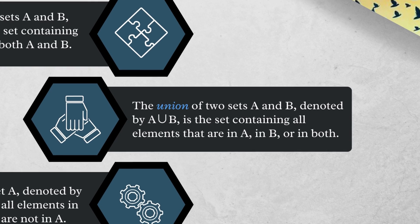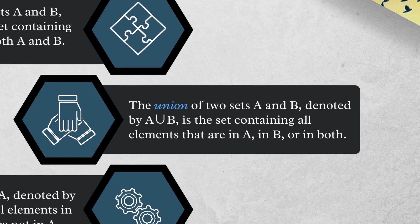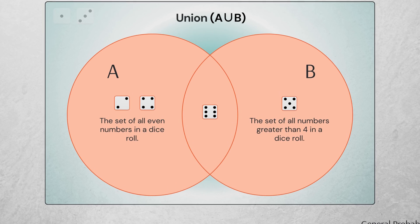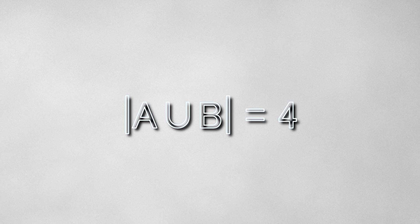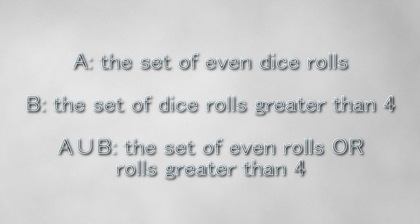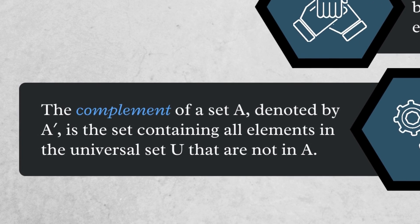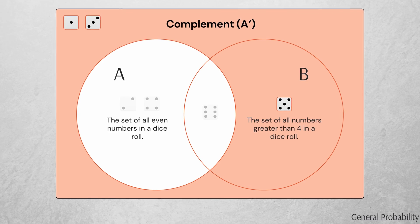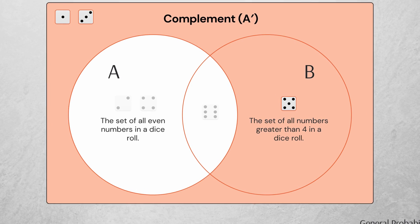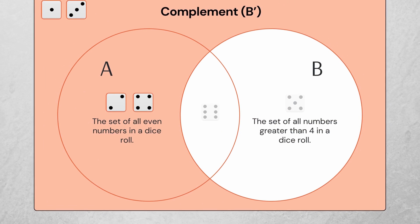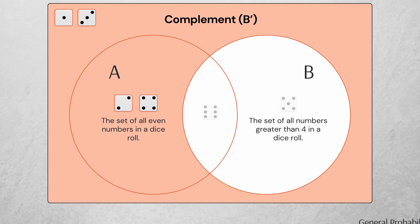A union B is a set containing all elements that are in A, in B, and in both A and B. In this example, the union of A and B are the rolls 2, 4, 5, and 6. The cardinality of A union B is 4, and so the probability of A union B is 4 over 6, or 2 over 3. This probability represents the chance that you roll a number greater than 4 or an even number. The complement of A is the set of all elements not in A but still in the sample space, so the complement of A is the set containing the rolls 1, 3, and 5. Similarly, the complement of B is the set containing the rolls 1, 2, 3, and 4.